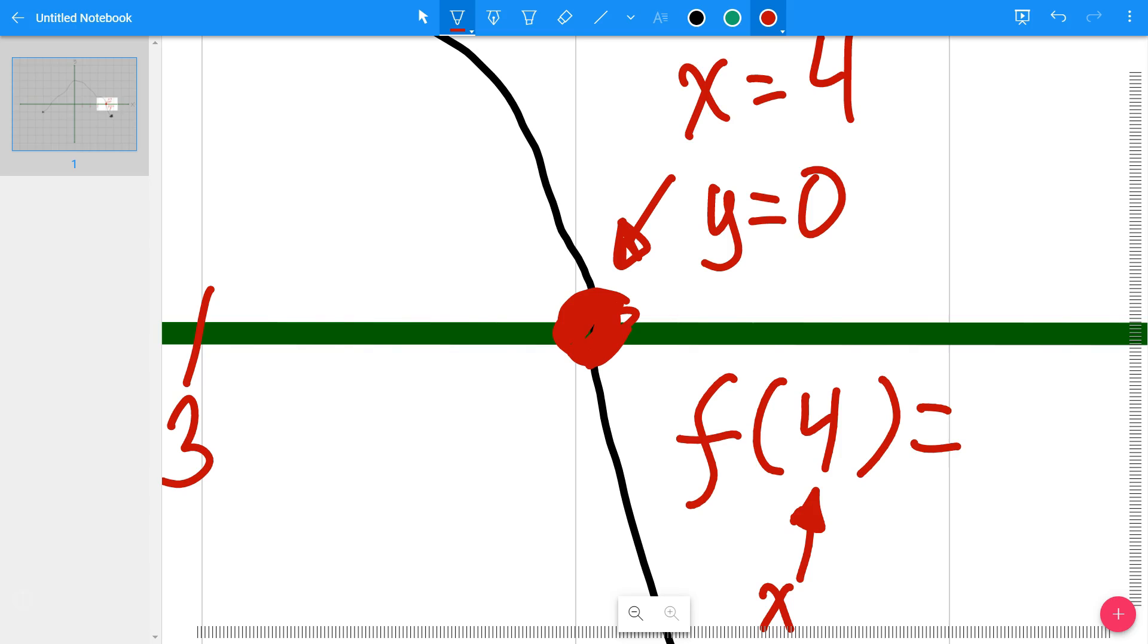f of 4 is simply equal to the value of the y-coordinate. So again, from the perspective of a point, you have x equals 4, y equals zero, those are the coordinates of this point. If you want to use function notation on the other hand, you would say f of 4 equals zero.